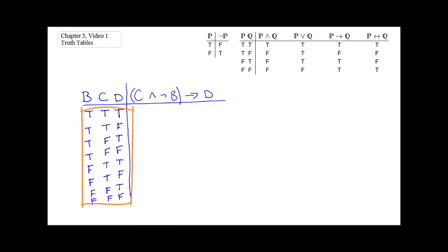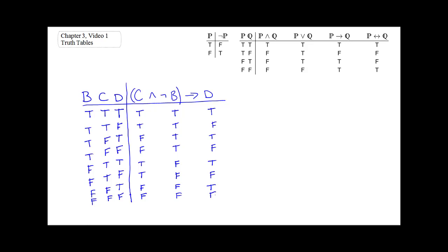The next step is to copy these basis columns over to the other side of the table underneath their corresponding letters. So C alternates by two's, B alternates by four's, and D alternates one by one. Just like when we calculated the single set of values before, the last place we're going to put values in is underneath the conditional arrow, because that's the main connective. To determine that value, we need to determine the values of the subcomponents first, building from the smallest components out to the whole.